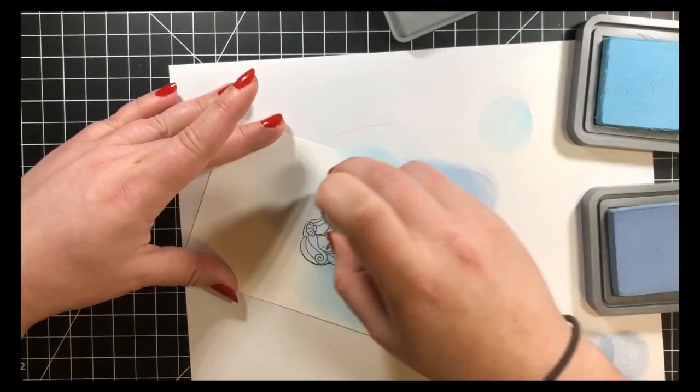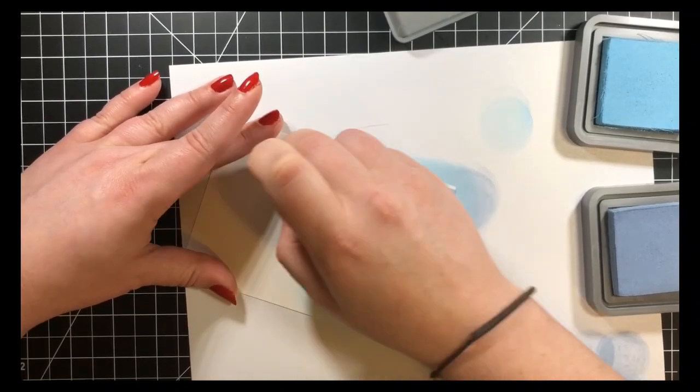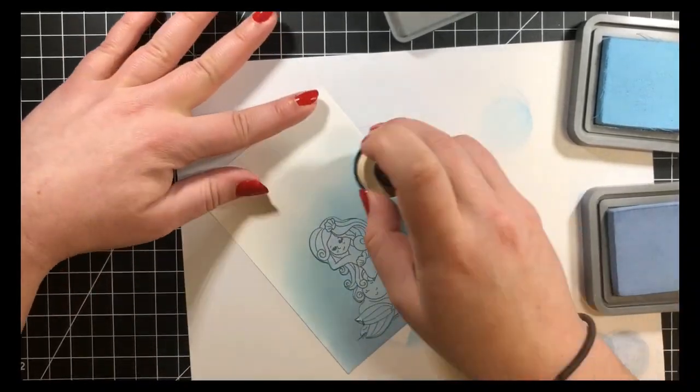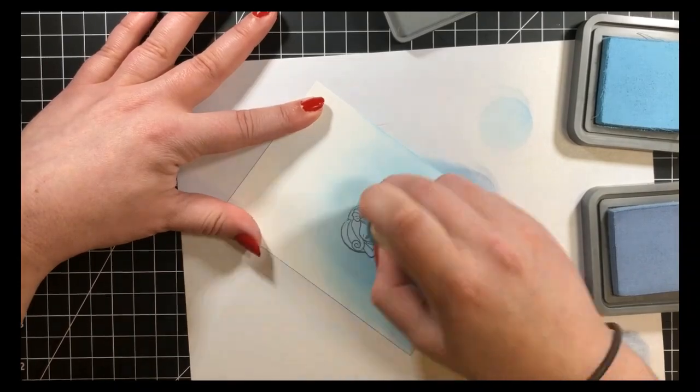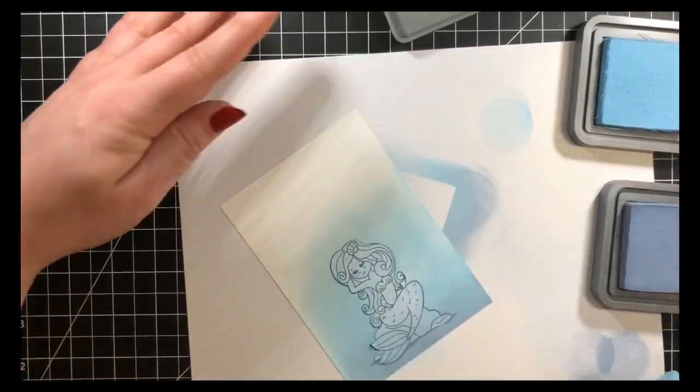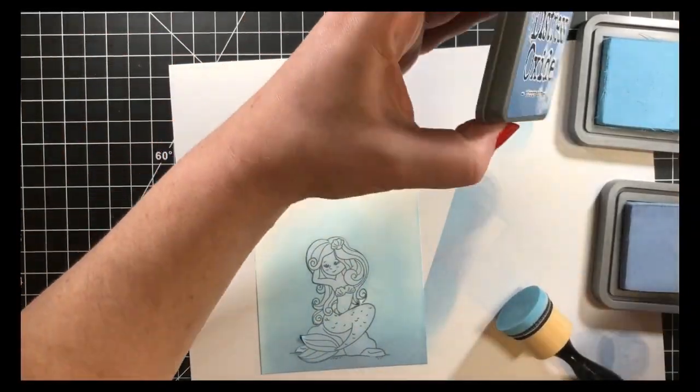Basically just fading this out to white. These blend really well together. You don't really have to work at it too much. Once I was happy with my coverage here, I went ahead and removed my mask and we'll move on to the Copic coloring.